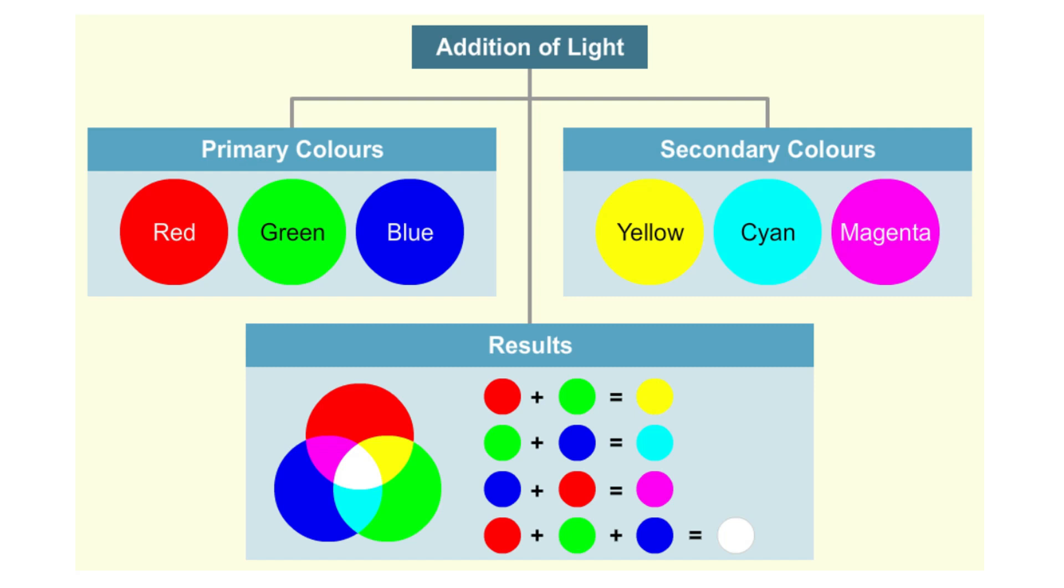These are colours that cannot be produced by mixing up light of other colours. Warna merah, biru dan hijau adalah warna primer ataupun warna asas yang tidak boleh dihasilkan melalui pencampuran warna cahaya yang lain.